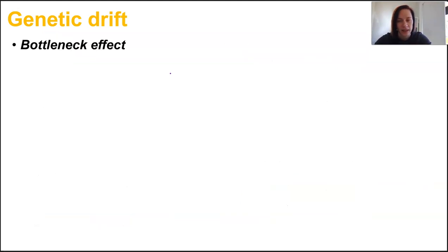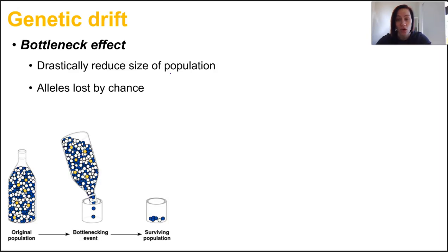Now the bottleneck effect occurs after a catastrophic event or a long period of time with adverse environmental conditions like earthquakes, volcano, famine, drought, those kinds of things. And this drastically reduces the size of the population and therefore the alleles in the gene pool might be lost by chance. The population that grows out of this new smaller population can carry limited alleles in their gene pool, which isn't great for variation and survivability.